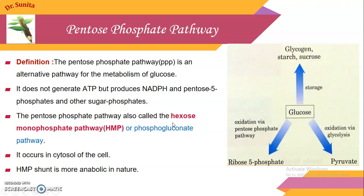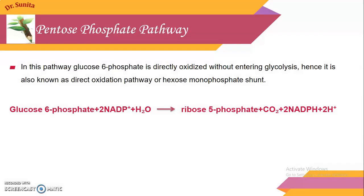Pentose phosphate pathway is also known as hexose monophosphate pathway or phosphogluconate pathway. Like glycolysis, it also occurs in the cytosol of the cell. As glycolysis is catabolic in nature, the hexose monophosphate pathway is more anabolic in nature as compared to catabolic.